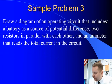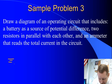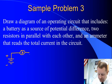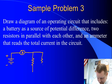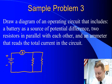Let's try another one: draw a diagram of an operating circuit that includes a battery as a source of potential difference, two resistors in parallel with each other, and an ammeter that reads the total current in the circuit. We start with our battery — positive side on the longer edge. We add an ammeter (a circle with an A) to read the total current. Then we draw two resistors in parallel and connect them back to the other side of the battery to have our closed loops. That gives us our parallel circuit with an ammeter that measures the total current.